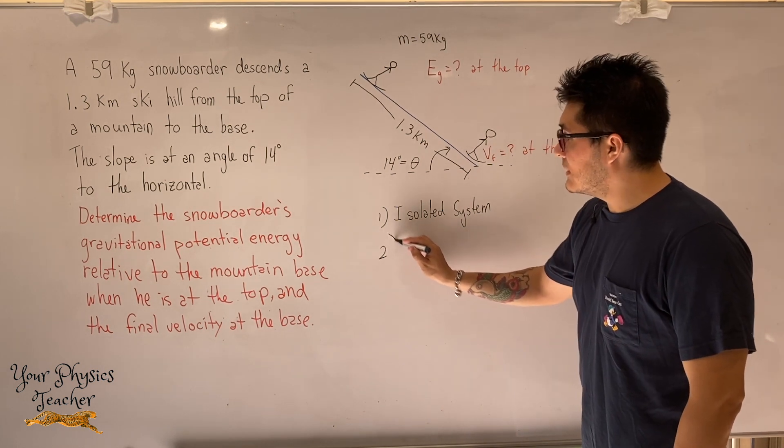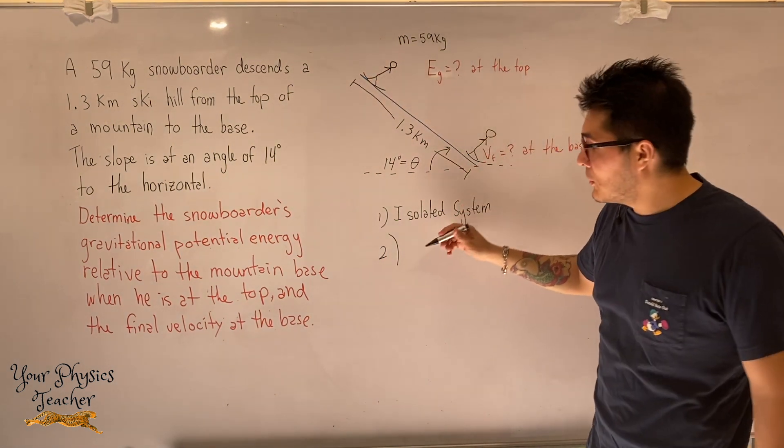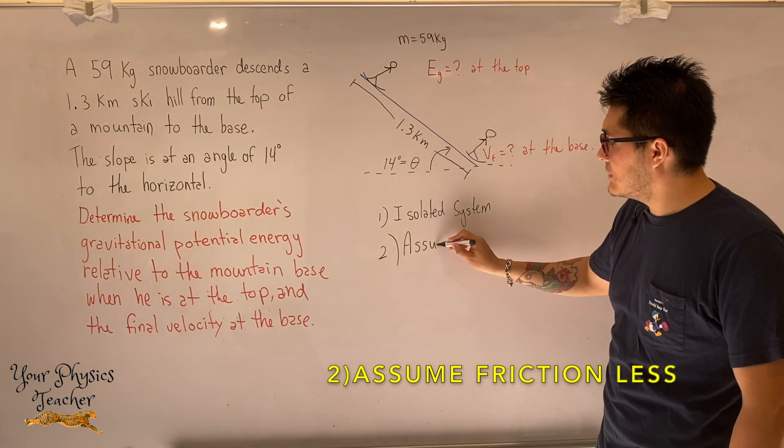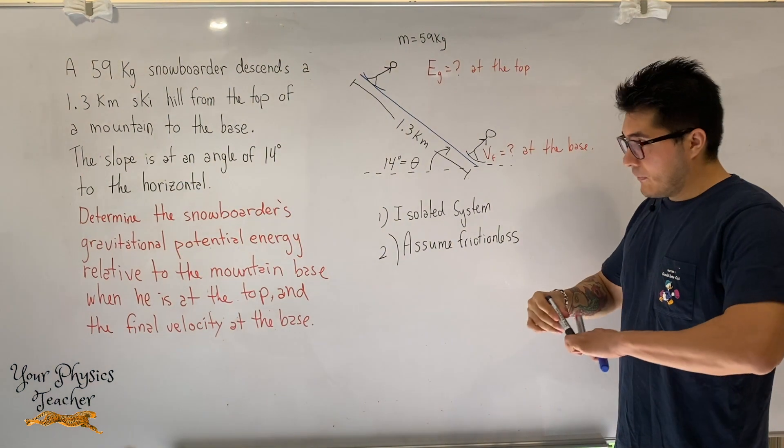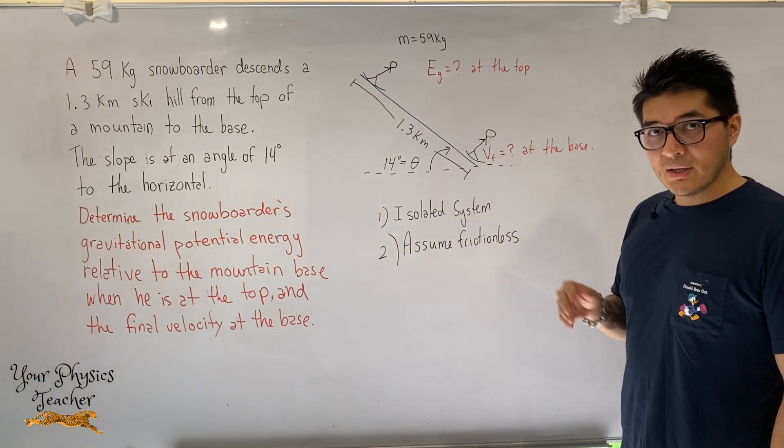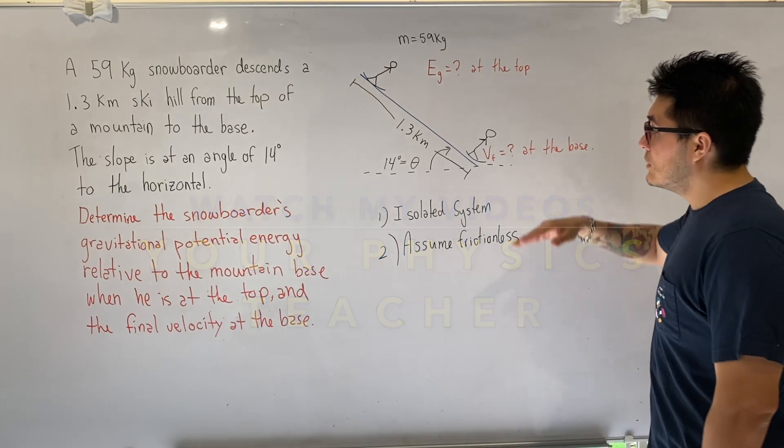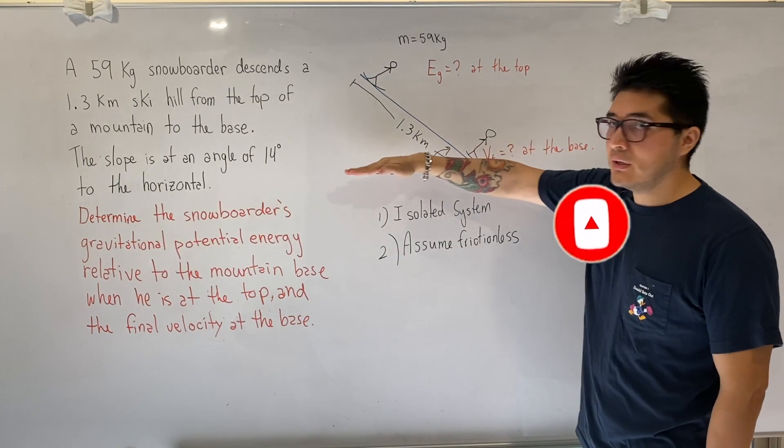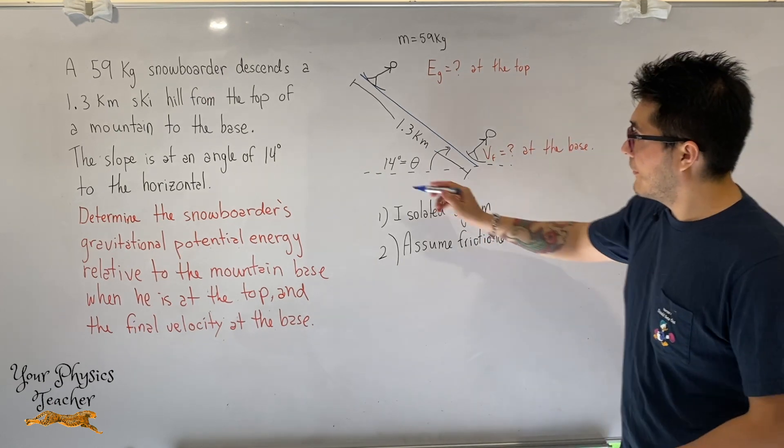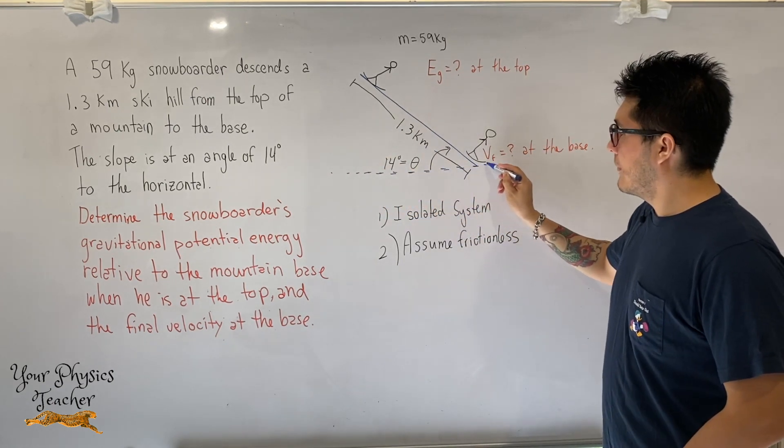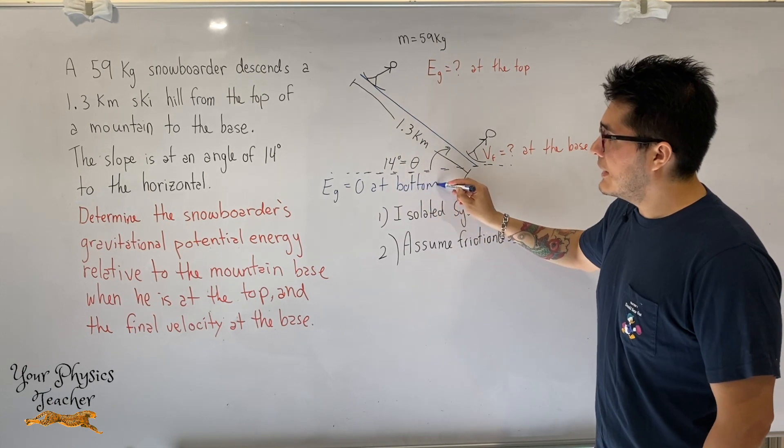The second thing we want to assume is because they didn't tell us anything about friction here, we can assume that in snow, if you experience snow, we can assume to be almost frictionless surface. So assume frictionless. Once we've done these two assumptions, then we need to do our zero potential for gravitational potential energy. You always want to consider the lowest point achieved to be our zero potential. So E_g equals to zero at the bottom.